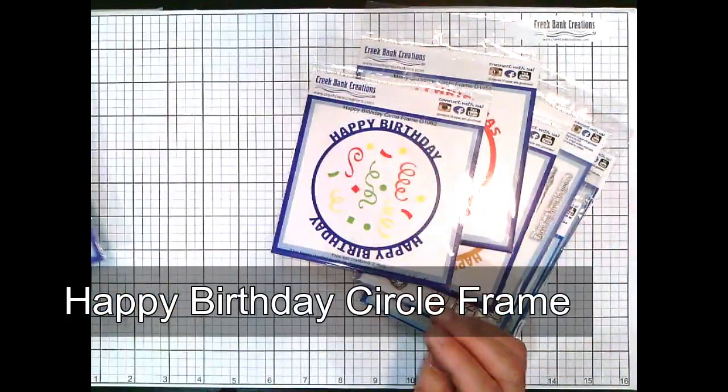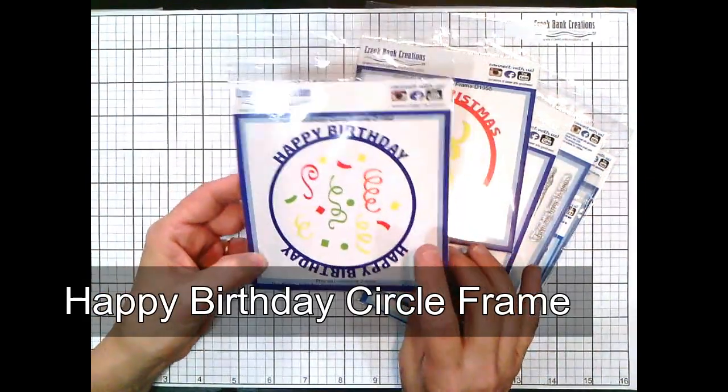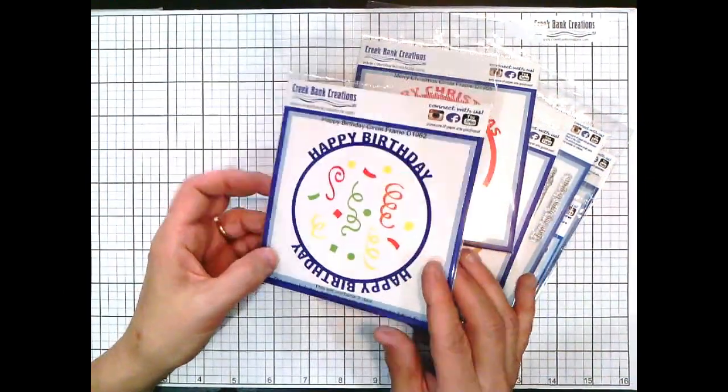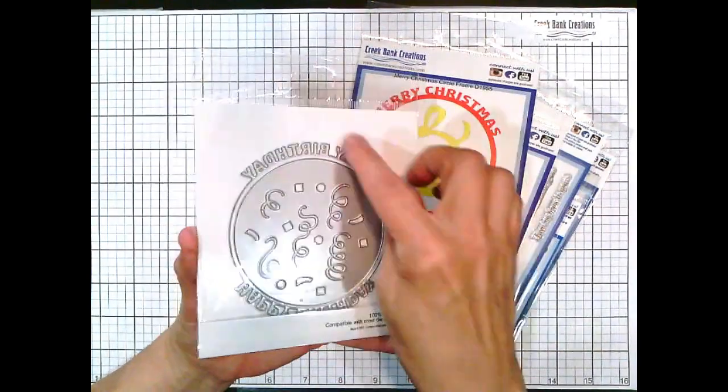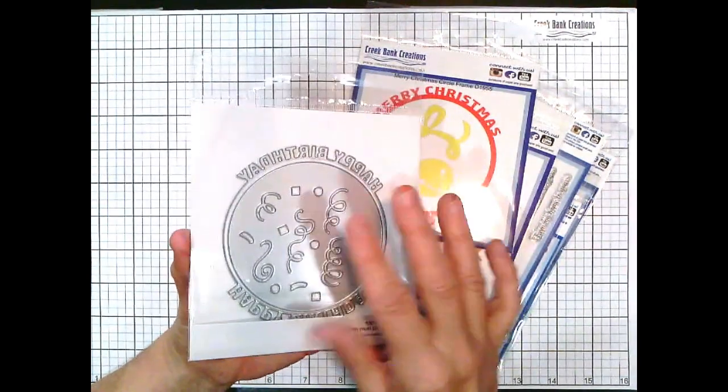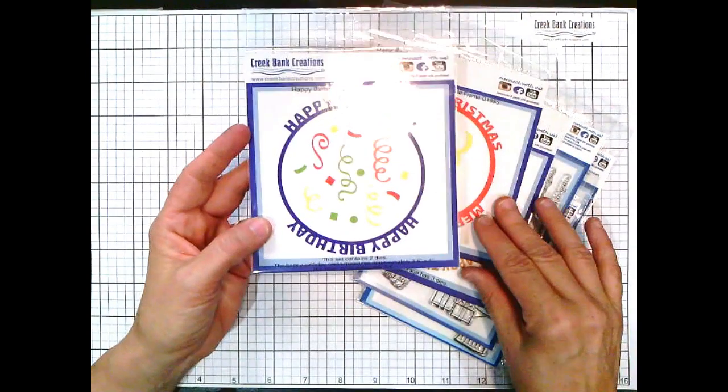Three dies to go with this: the happy birthday circle. And if you look at these, you'll notice you have an exterior die and an interior die. All of them come with multiple designs in them.